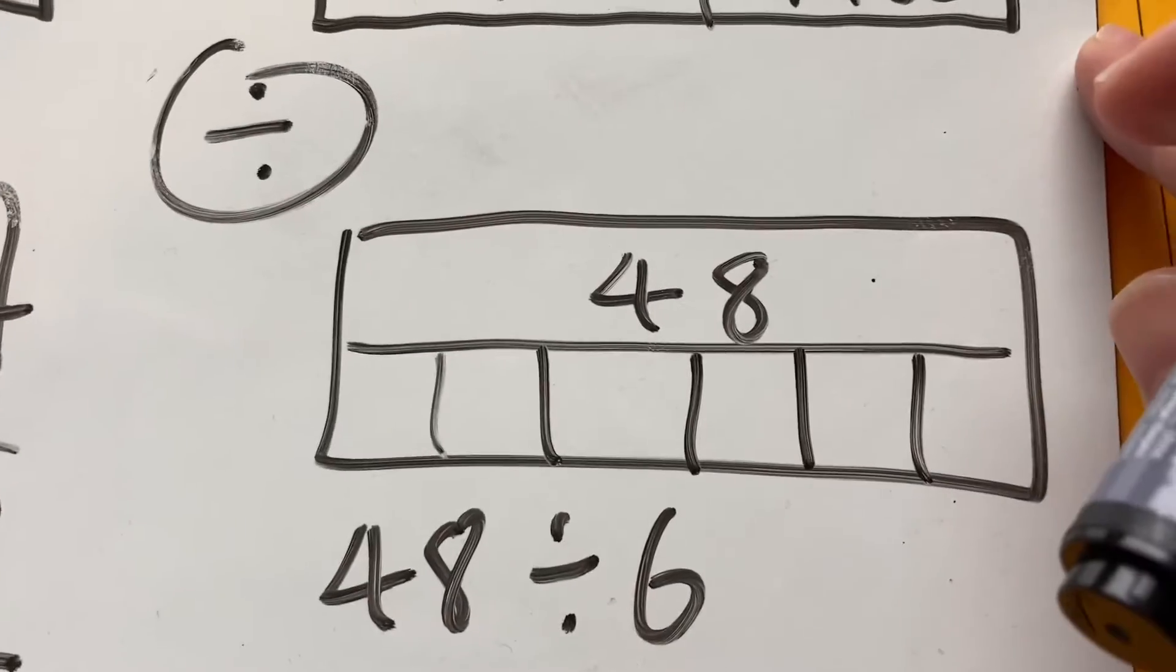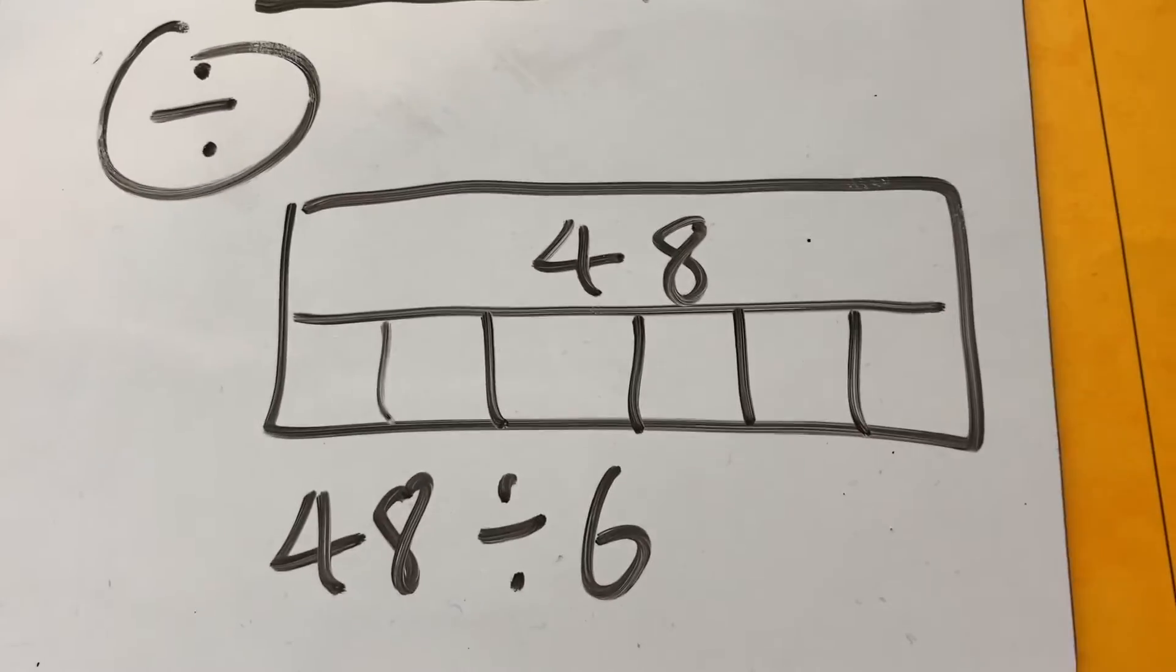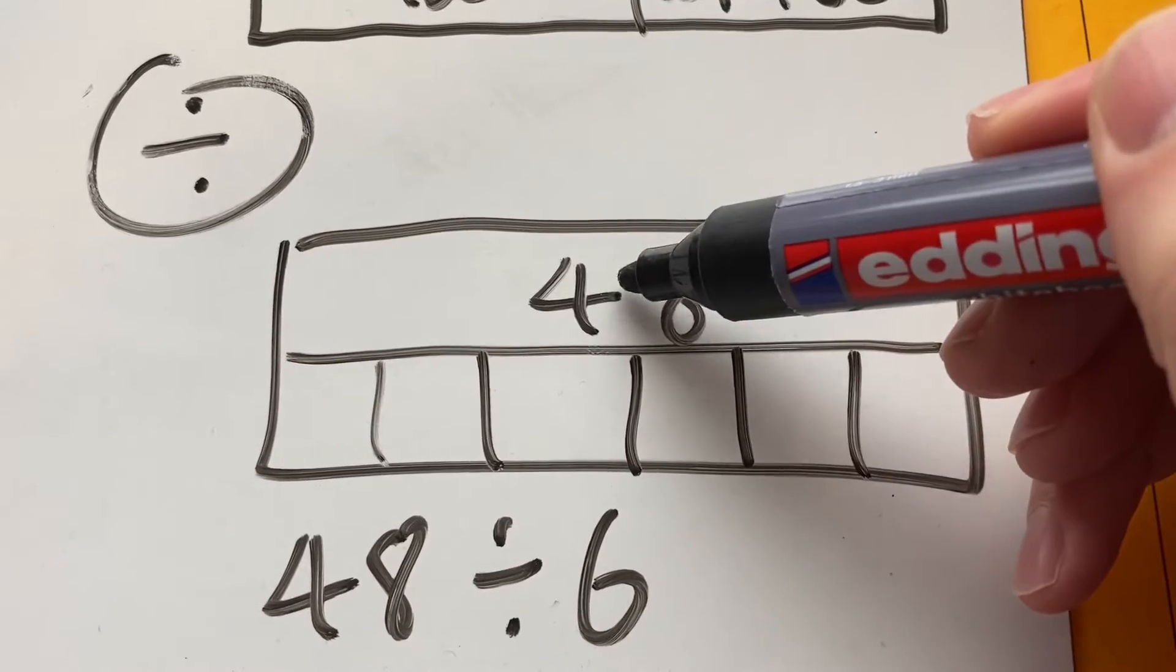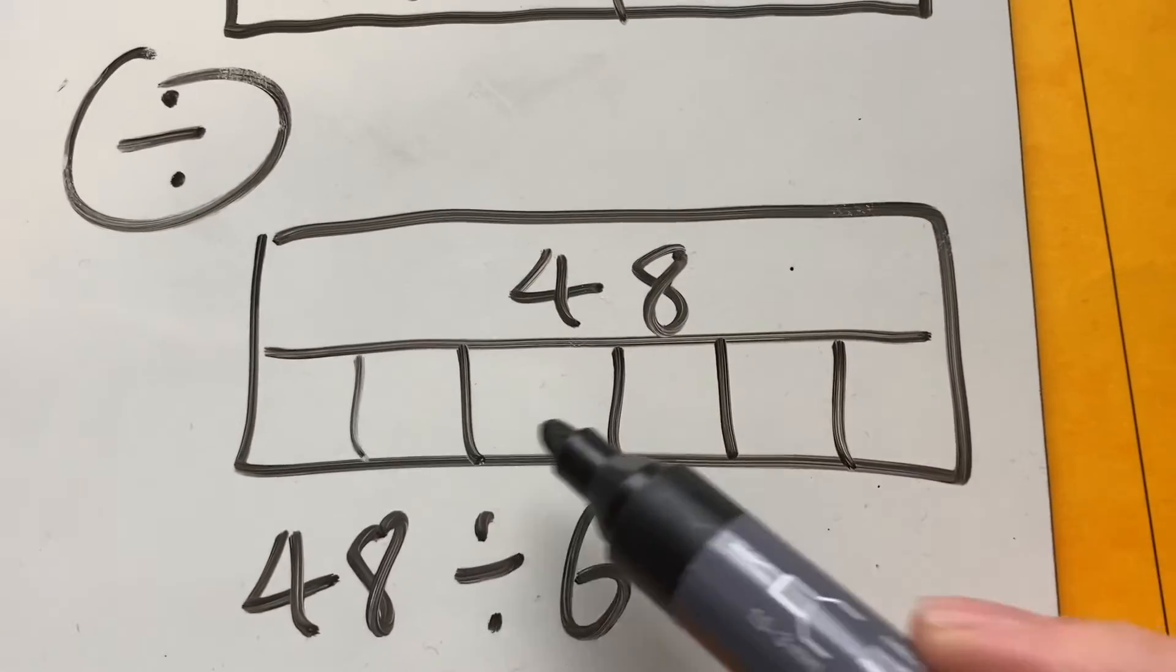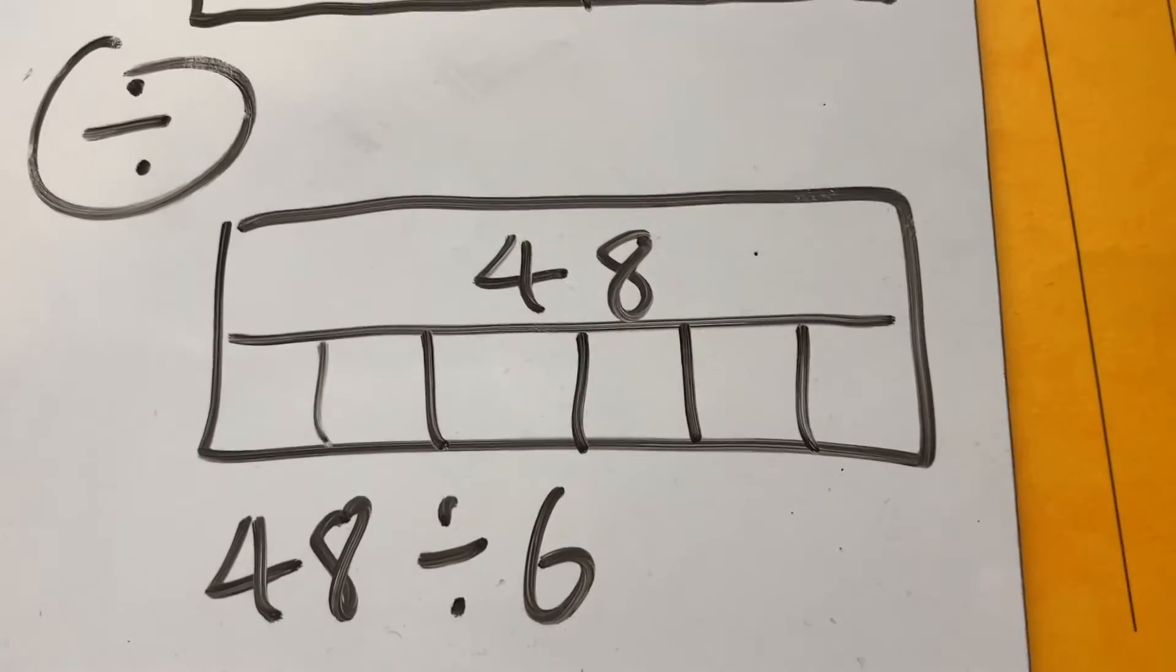Let's look at the fourth operation, division. And we've got 48 divided by 6. So I've got the big bar here being 48. I'm broken up to 1, 2, 3, 4, 5, 6 parts. So if I don't know straight away, imagine maybe I think it's 10.